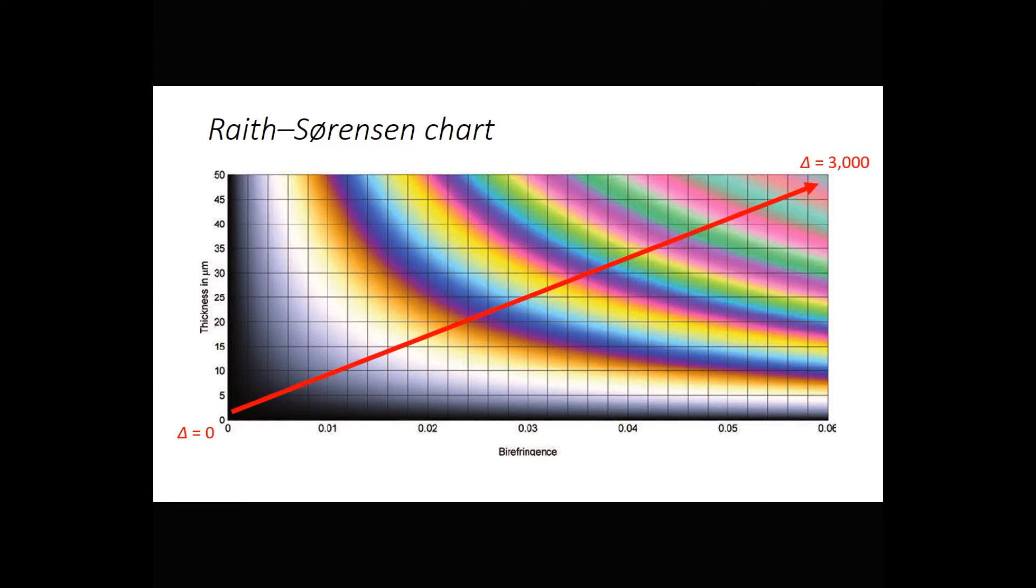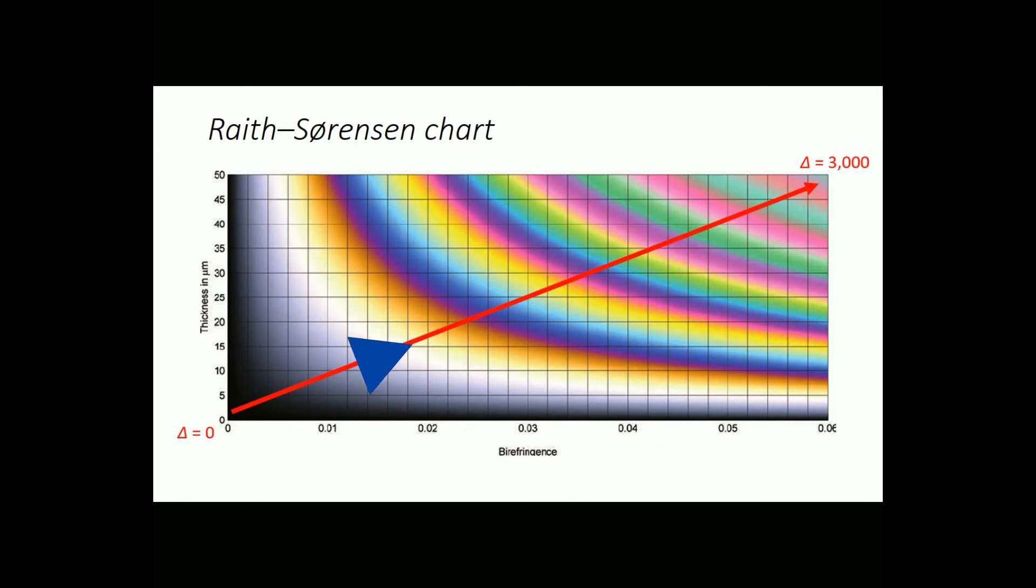Grains that are very thin or that have very low birefringence will only show black, gray, or white colors. Grains that are a little bit thicker will begin to show yellows and pinks and blues and things, and the colors repeat as retardation increases. Overall, the colors become less pronounced as retardation goes to greater and greater values.